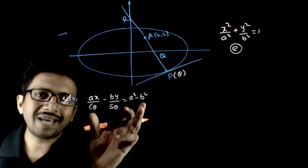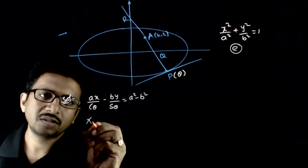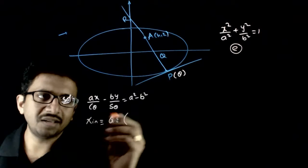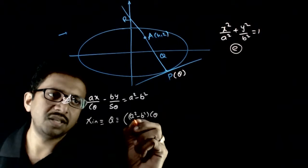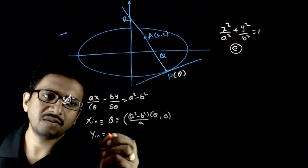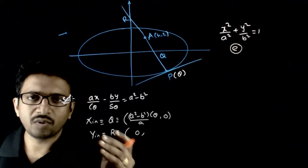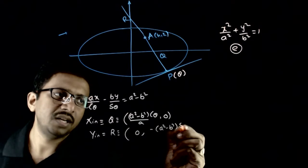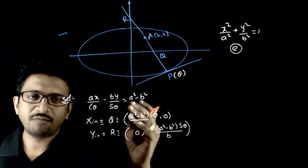To find the x-intercept and y-intercept of the normal: put y = 0 to get x-intercept, which is point Q = ((a² - b²)cosθ / a, 0). The y-intercept, which is point R, is found by putting x = 0, giving R = (0, -(a² - b²)sinθ / b).